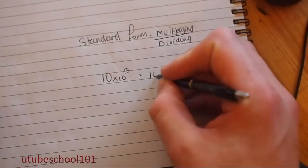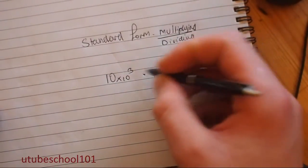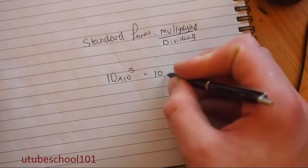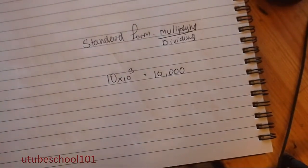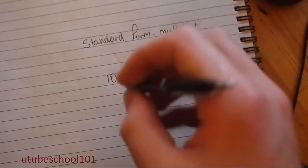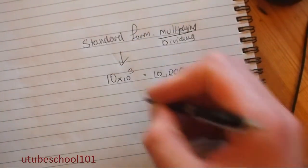so here we have 10 times 10 to the power of 3. So in normal numbers, this will mean 10 shifted to the left 3 times, which means it's 3 zeros on the end, so it's worth 10,000. So this is basically what standard form is.